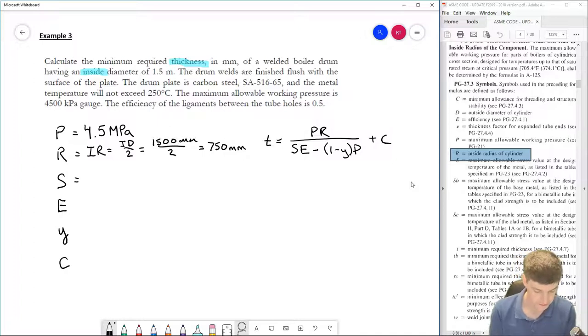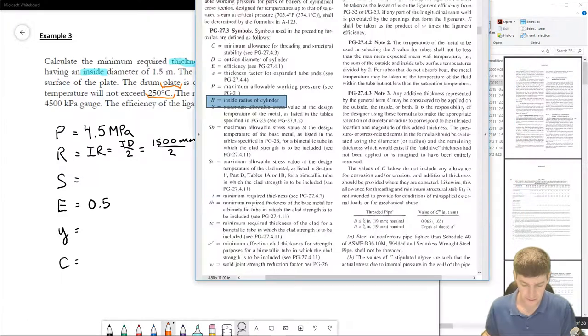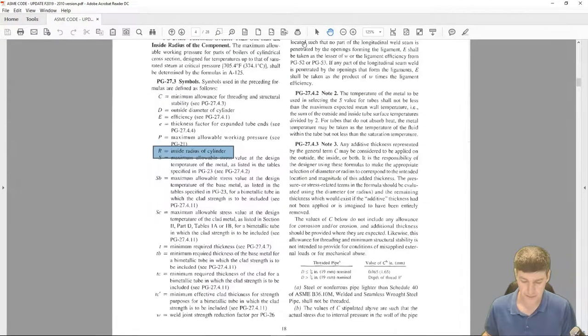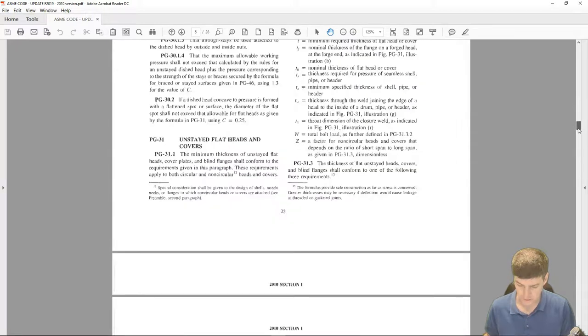Okay, S value, we'll find out of our tables. I've been given E value, so the efficiency wasn't given as a percentage, it was given as a decimal, and I'm going to leave it as a decimal. And then I have Y, which I'll have to find, and C as well. Okay, so let's find our S value. If we go and look at our materials, what I have is SA516-65, and it is a plate, and it is at 250 degrees Celsius.